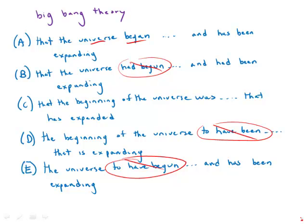Notice also for the verb 'has been expanding' - that expanding has been happening and is still happening. Notice that choice C says 'has expanded' as if the expansion has stopped. But we know that it's going on.